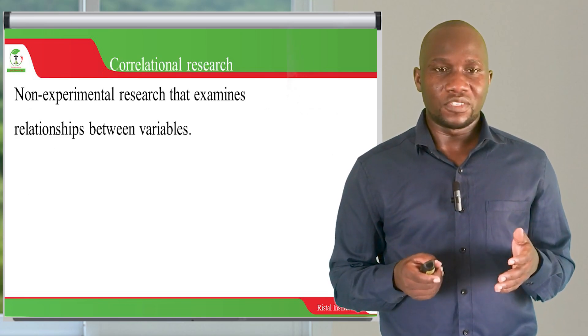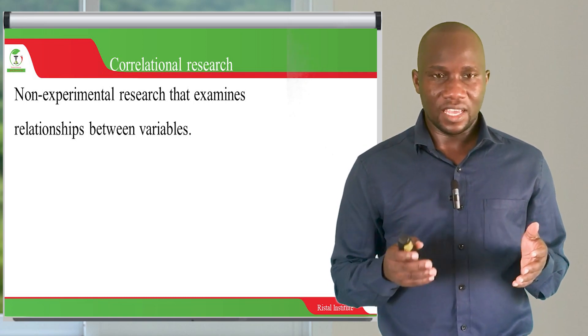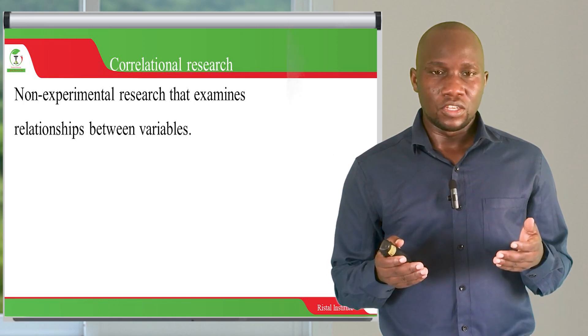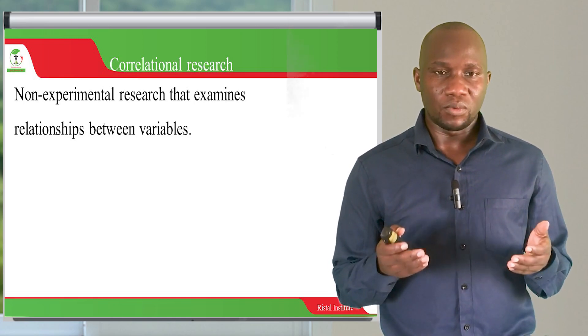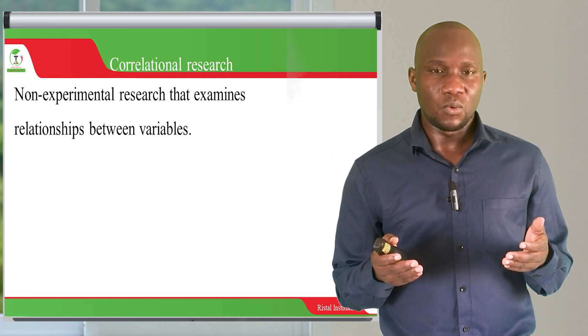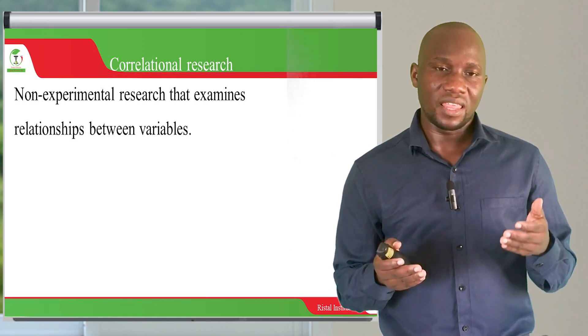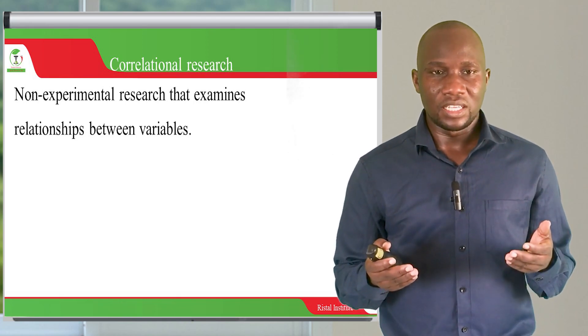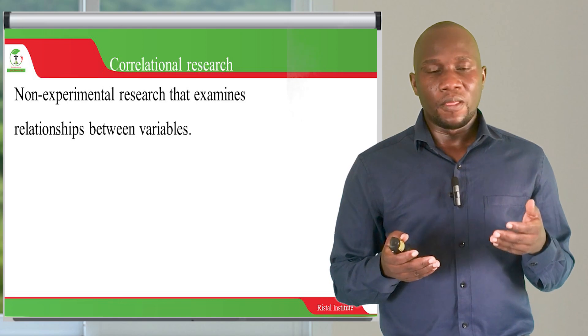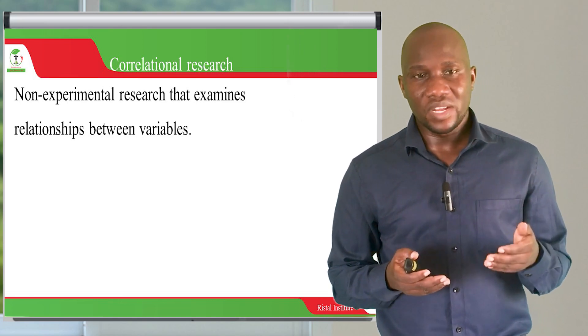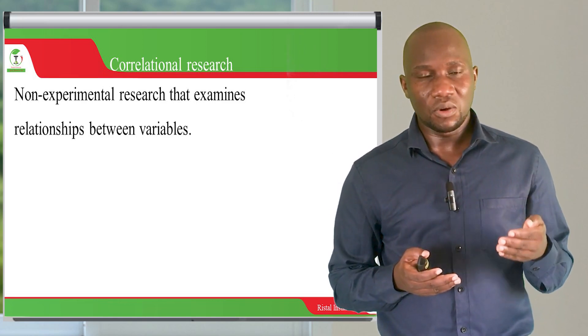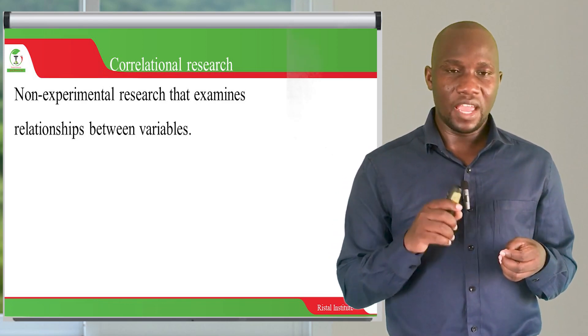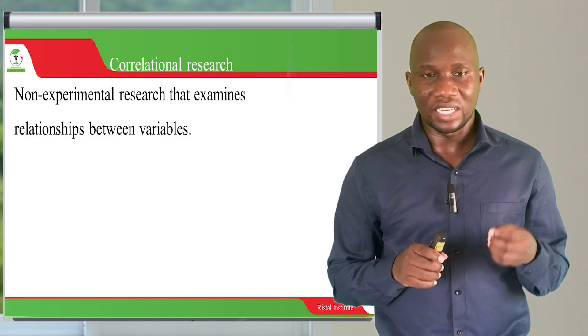In correlational research, we seek to understand the relationship between two variables. We are investigating two variables to see which one causes the other and what happens to one when the other changes. The unique thing with correlational research is that it is not experimental, meaning there is no manipulation of either of the variables that are under investigation.